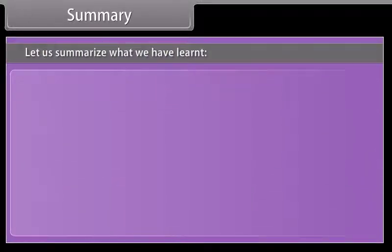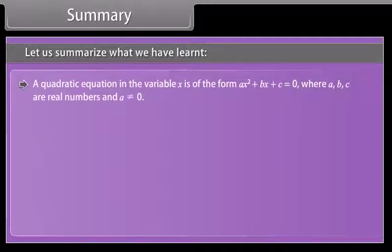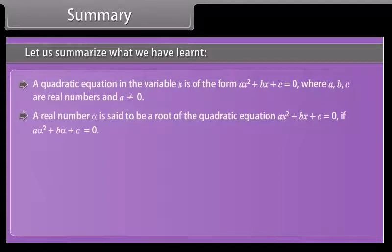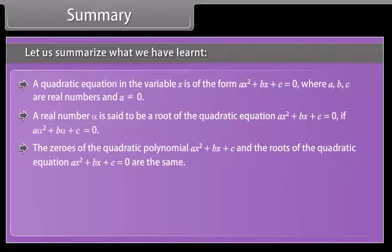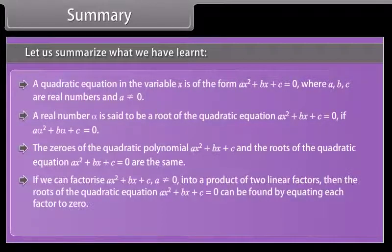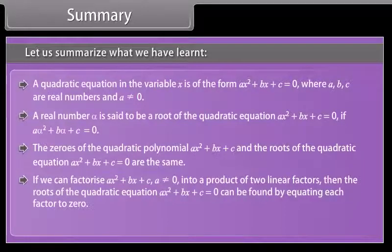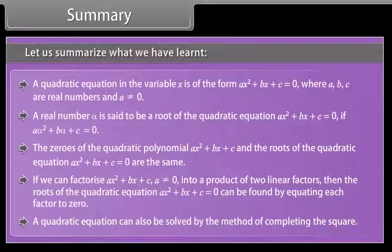A quadratic equation in the variable x is of the form ax² + bx + c = 0, where a, b, c are real numbers and a ≠ 0. A real number alpha is said to be a root if aα² + bα + c = 0. The zeros of the quadratic polynomial ax² + bx + c and the roots of ax² + bx + c = 0 are the same. If we can factorize ax² + bx + c into a product of two linear factors, the roots can be found by equating each factor to zero. A quadratic equation can also be solved by completing the square.